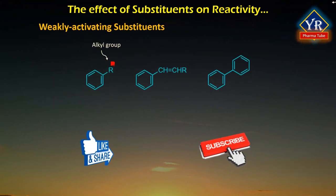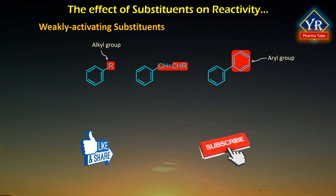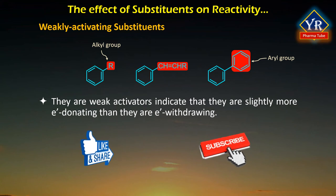Alkyl, aryl, and CH=CHR groups are weakly activating substituents. An alkyl substituent donates electrons to the ring by hyperconjugation. Aryl and CH=CHR groups donate electrons to the ring by resonance and also withdraw electrons from the ring by resonance. The fact that they are weakly activating indicates that they are slightly more electron-donating than they are electron-withdrawing.